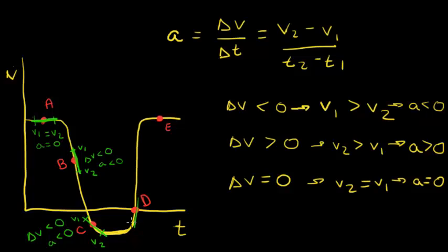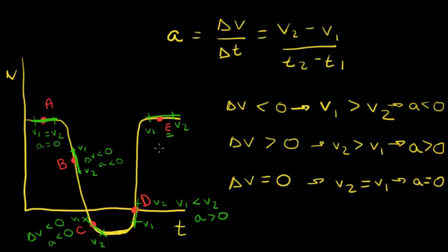At point D, we can draw a similar tangent line, and our initial velocity is less than our final velocity. That means the change in velocity is positive. Therefore, our acceleration is also positive. Finally, at point E, our initial velocity and our final velocity are equal. Since the change in velocity is zero, our acceleration is also zero. And that is how you solve example 2.4.